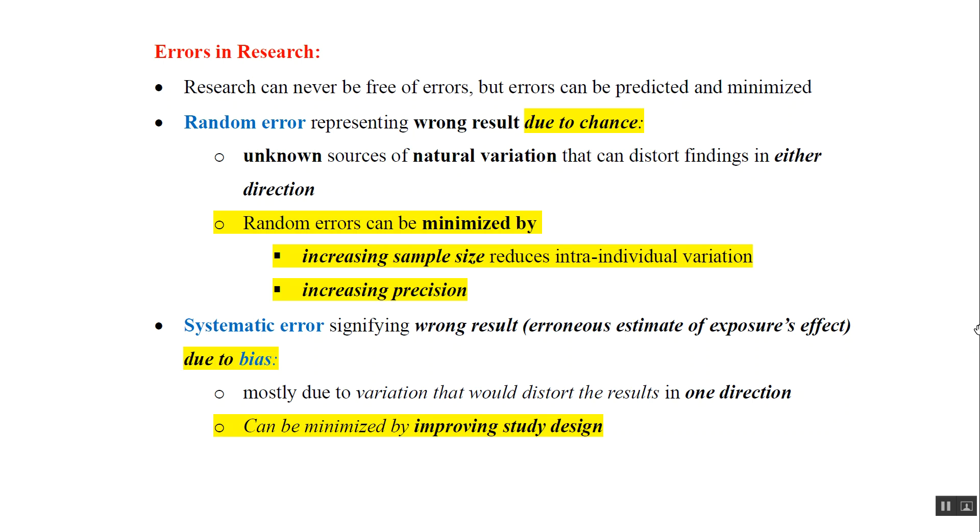Random error represents wrong results due to chance. They are unknown sources of natural variation that can distort findings in either direction. Random errors can be minimized by increasing sample size, which decreases intra-individual variation, and by increasing precision.